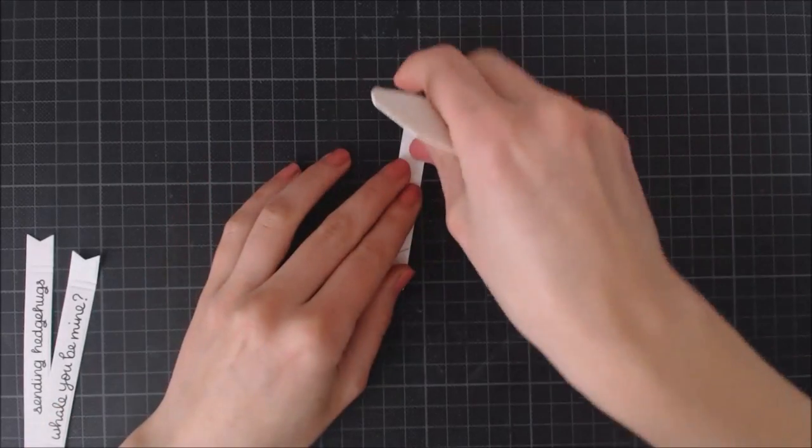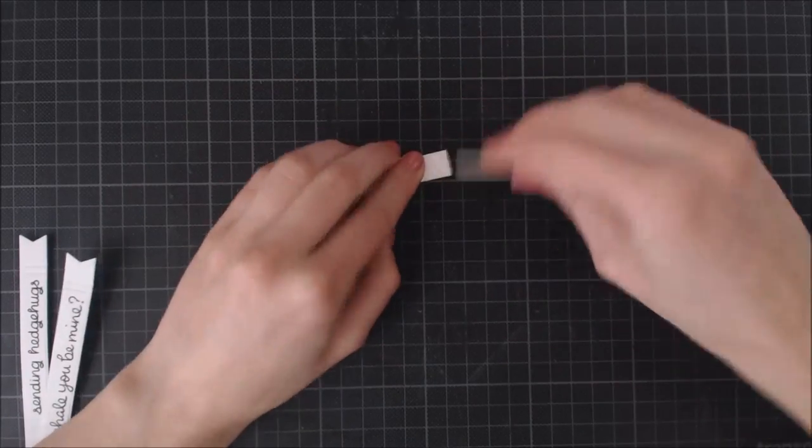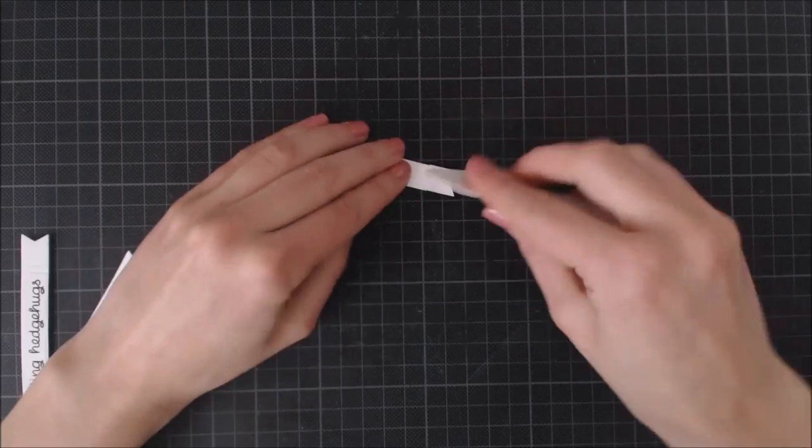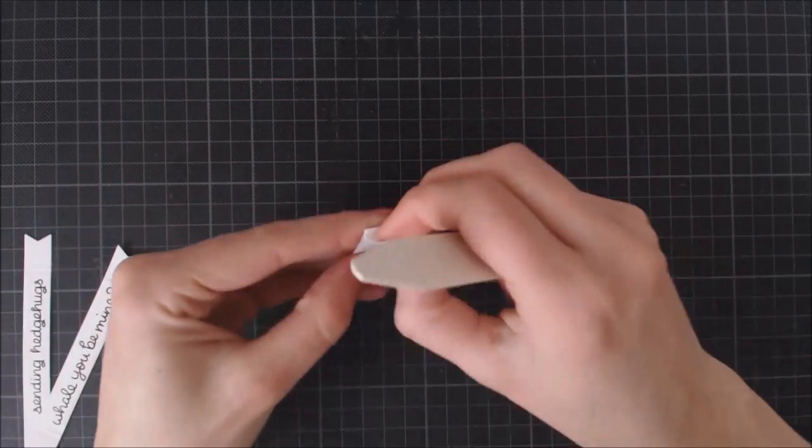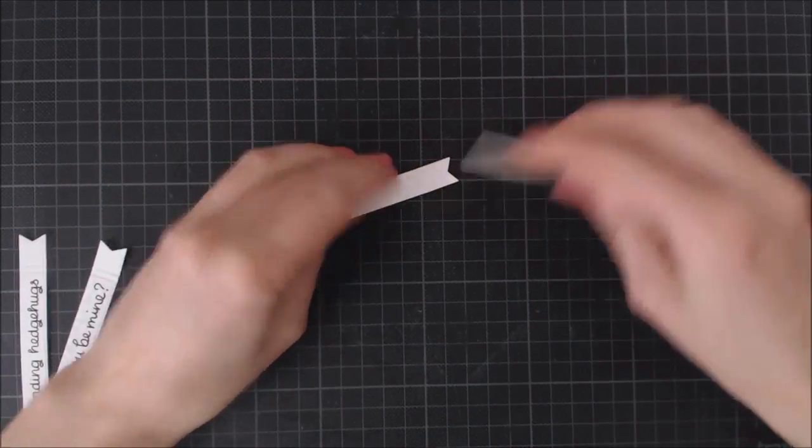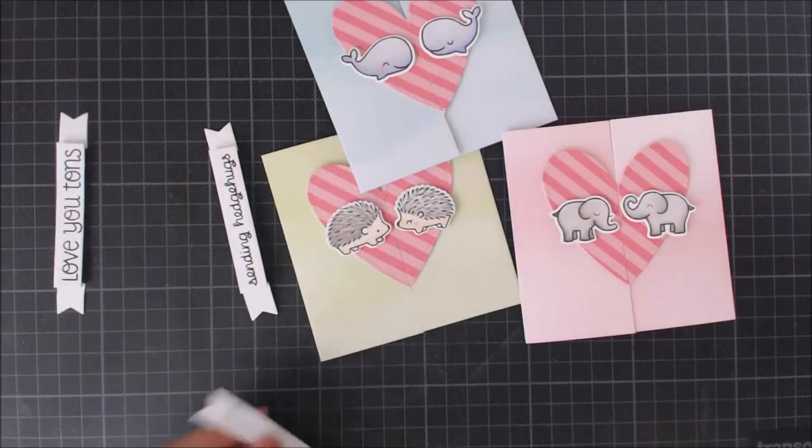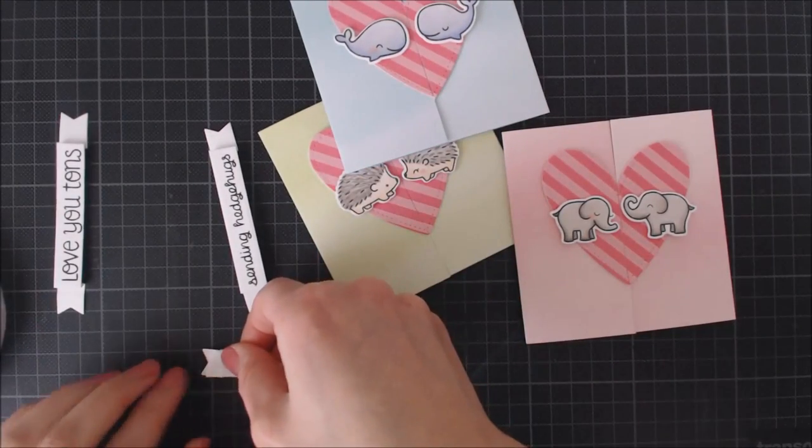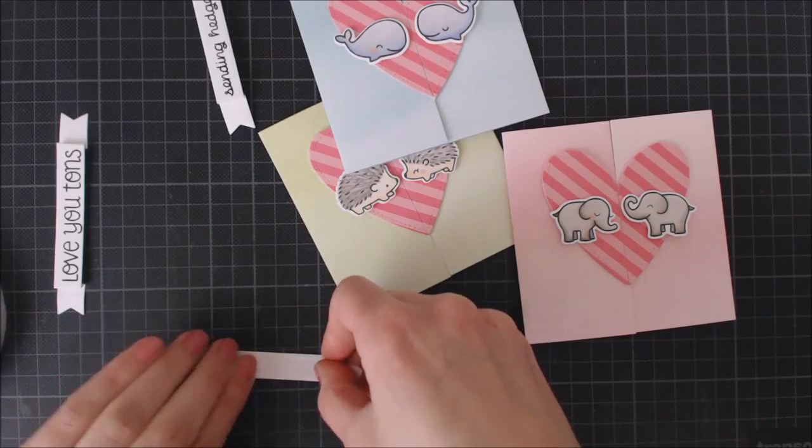I'm just doing two score lines on each side of the sentiment. Then I'm going to fold each banner backwards on the first score line and fold it again forward on the second score line. Finally I'm using double-sided adhesive tape to add the sentiment banners to my cards.